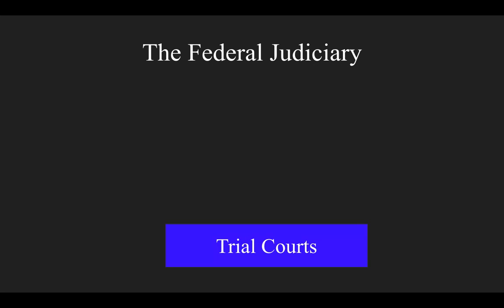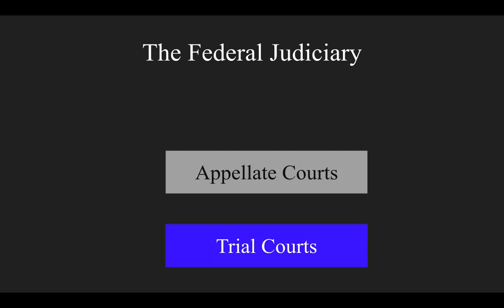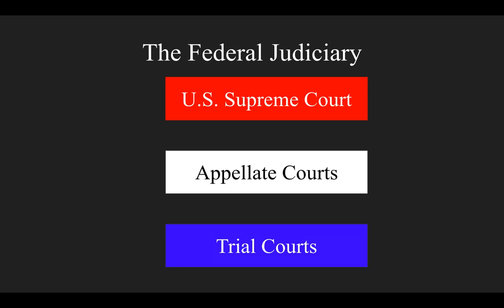The federal judiciary is made up of three main levels of courts. The lowest level includes trial courts, which initially decide cases. Above the trial courts are appellate courts, which review cases already decided in a trial court. And then the highest level is the Supreme Court, which has final authority over all cases.